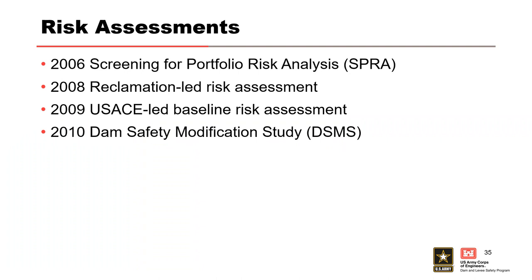The risk assessment started with a screening in 2006, and the dam was then classified as high risk. In 2008, Reclamation led a joint risk assessment that resulted in recommendations for interim risk reduction measures and a more detailed baseline risk assessment. Following this, a reservoir restriction was implemented, lowering the summer pool 20 feet to elevation 1650 and a winter pool nearly 30 feet to elevation 1623. Additional instrumentation with more frequent monitoring and 24-hour surveillance were performed in the interim to reduce risk. A baseline risk assessment performed in 2009 led to the 2010 Dam Safety Modification Study.